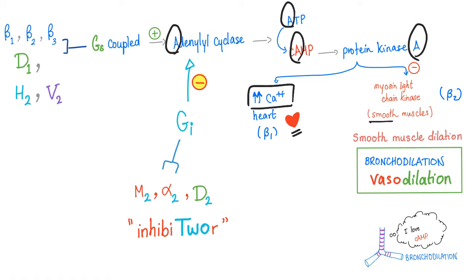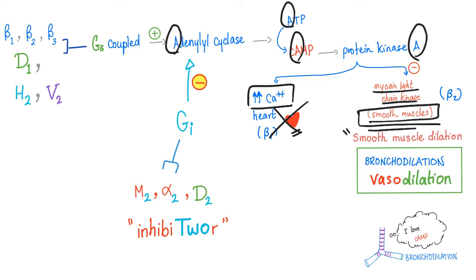But if you're talking about smooth muscle — not the heart, which is cardiac muscle — cyclic AMP through protein kinase A will inhibit myosin light chain kinase. When you inhibit myosin light chain kinase, which was responsible for contraction, you end up with smooth muscle relaxation. So if you're talking about your bronchi: bronchodilation. If you're talking about a vessel: vasodilation.